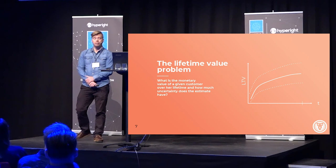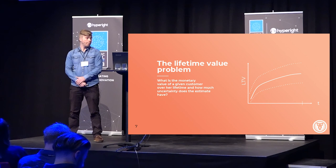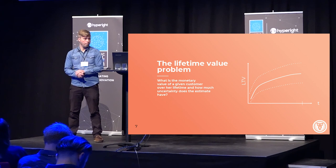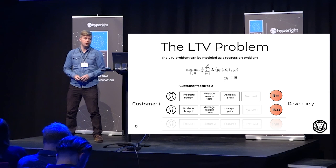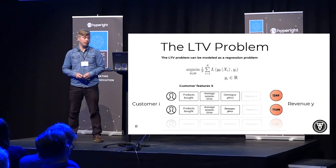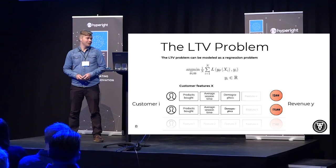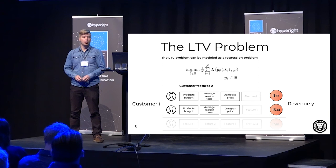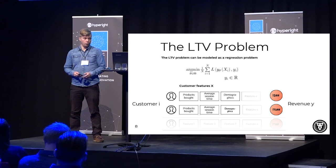Moving on to the next problem: the lifetime value problem. Here we are concerned with the value of customers coming to our service. We want to know what happens to them during their lifetime, and we also want to quantify the uncertainty — how good are these predictions. Again we construct a predictor and try to minimize some loss function, but this time the problem is different because we are not predicting some sort of label but rather revenues. Typical features that say something about these customers could be products bought, how much time they spent in sessions, and something that describes the customers — maybe zip codes, marital status, and so on.